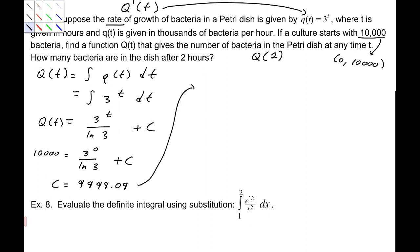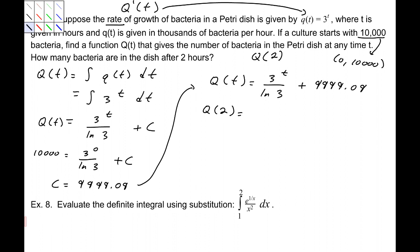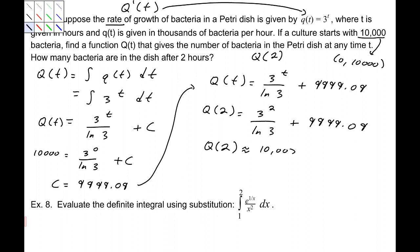So the equation is Q(t) equals 3 to the t over natural log of 3 plus 9,999.09. To find the answer, we plug in t equals 2: that's 3 squared over natural log of 3 plus 9,999.09, which gives approximately 10,007.28 — so there will be approximately 10,007 bacteria in the dish after two hours.